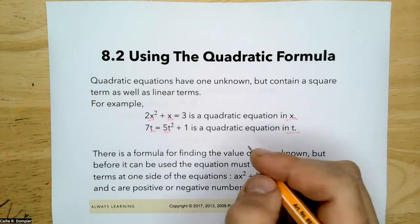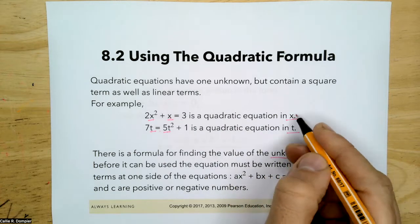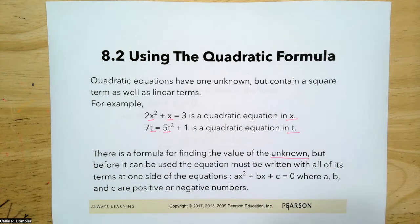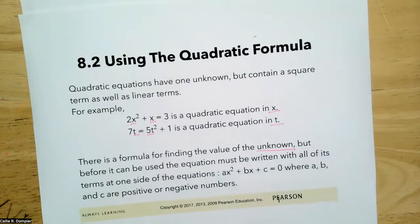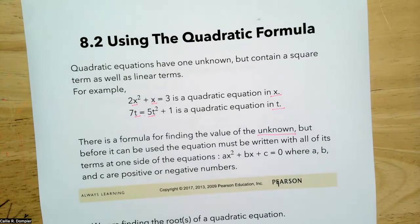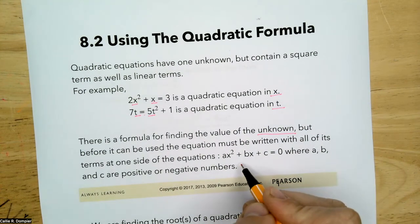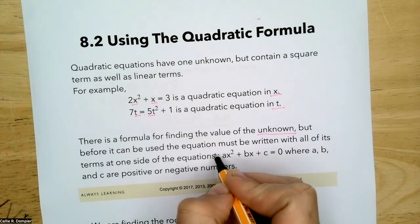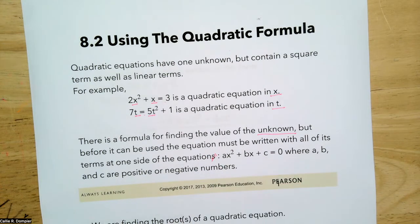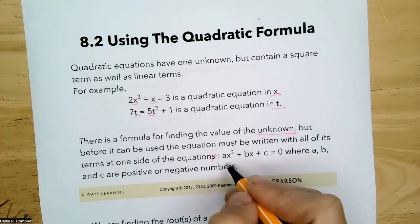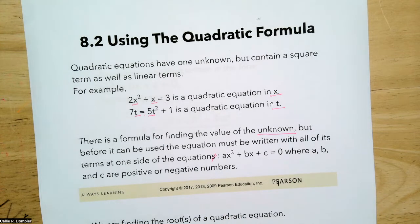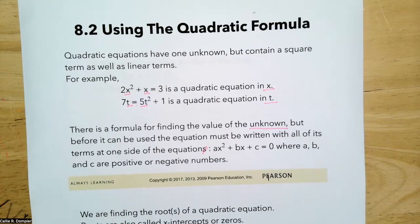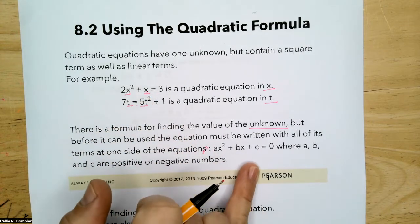There's a formula for finding the value of the unknown — the x, or whatever variable is used. But before it can be used, the equation must be written with all the terms on one side of the equation, set equal to zero — standard form. So the first step for using the quadratic formula is to make sure your quadratic equation is in standard form.